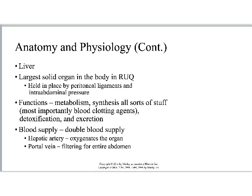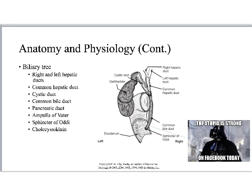We need to be comfortable with the biliary tree, knowing its parts in the order that bile flows through. The right and left hepatic ducts exit the liver and join to form the common hepatic duct. That joins with the cystic duct exiting the gallbladder to form the common bile duct. Eventually the pancreatic duct joins in, and the small portion running from the pancreatic duct to the sphincter of Oddi is called the ampulla of Vater — arguably the most awesome name in anatomy.